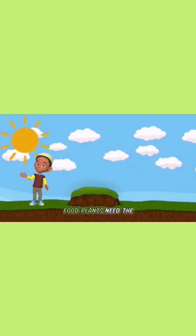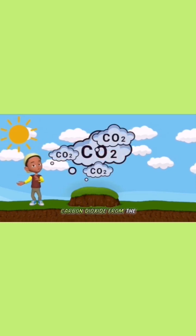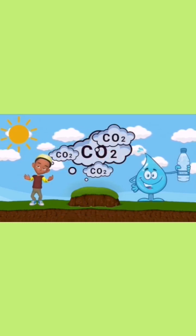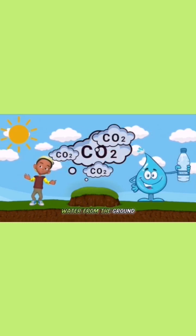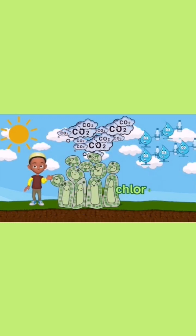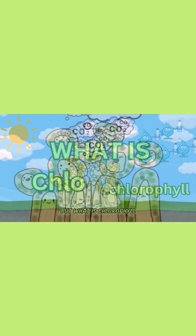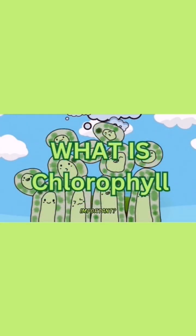To make their own food, plants need the sun, carbon dioxide from the atmosphere, water from the ground, and finally plants need the presence of chlorophyll. But what is chlorophyll and why is it important?